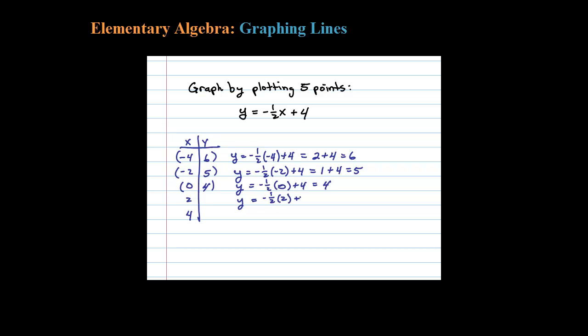-½ times positive 2 plus 4: -½ times 2 is -1, plus 4 is 3. Finally, -½ times 4 plus 4. Now you can see why I chose multiples of 2. -½ times 4, see how the 2 goes into 4 evenly there.